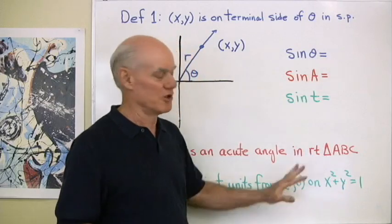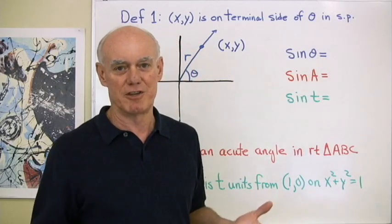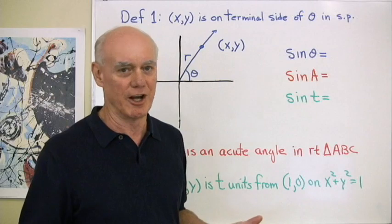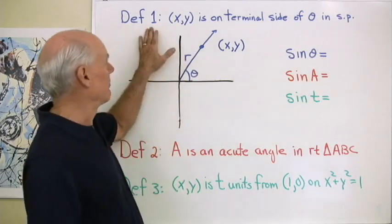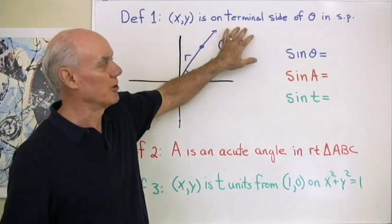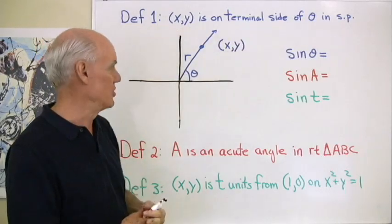So what I want to do here is just take a minute and show you that these three definitions are really equivalent to one another. Each has its uses in different parts of mathematics. So let's start with our first one. XY is a point on the terminal side of theta. Theta is in standard position.